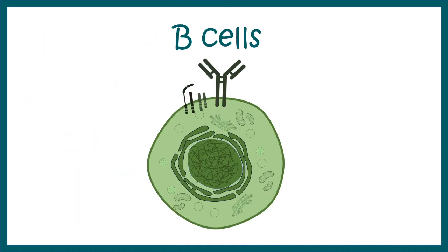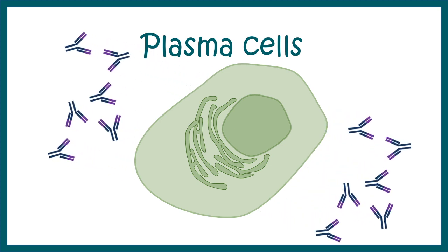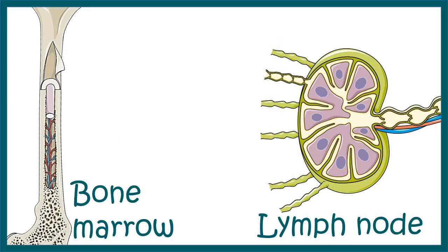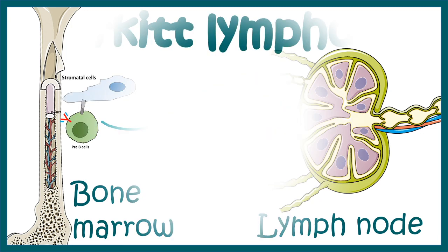The key player of Burkitt lymphoma is the B cell. B cells eventually give rise to plasma cells, which are a differentiated form of B cell that secretes antibodies to protect against pathogens. B cells are developed from the bone marrow — they are born there — and eventually migrate to the lymph node where they proliferate, forming the germinal center. This basic developmental feature helps us understand the pathophysiology underlying Burkitt lymphoma.